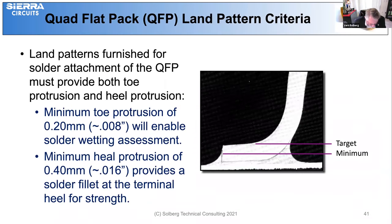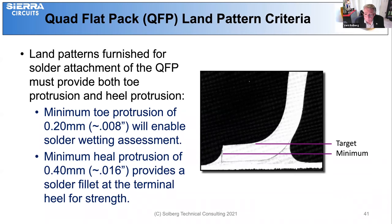QFP land pattern geometry must have adequate area for solder interface. There is a minimum toe protrusion recommended at about 8 mils, which enables solder wetting assessment. The heel is where the strength of that particular solder joint is, recommended about 16 thousandths or 0.40 mm, and that allows inspection of the solder. The target solder height is typically one times the thickness of the lead; the minimum requirement in JEDEC and IEC is a minimum of one half the lead thickness.